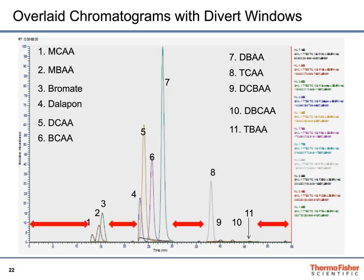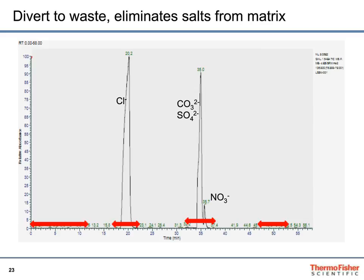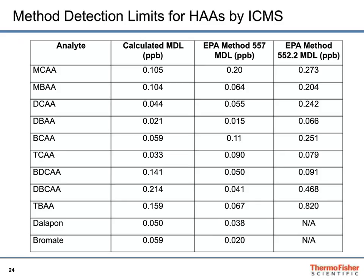We set a divert valve, shown by red arrows, which diverts the stream either to waste or to the source of the mass spectrometer. The software allows us to turn that divert valve at predetermined times. So the chloride comes out and we're sending that to waste, along with bicarbonate, sulfate, and nitrate. This keeps everything nice and clean in the mass spectrometer with more uptime, and we don't have to change any parts out. The detection limits we achieved for this analysis using EPA method 557 are right in line with what the EPA achieved as their method detection limit. For comparison, the IC-MS method is a little bit more sensitive than the previous GC method 552.